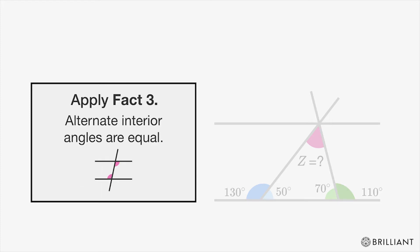Now let's apply Fact 3 to the light blue and light green angles. Since they're in between parallel lines, their alternate interior angles must be equal.